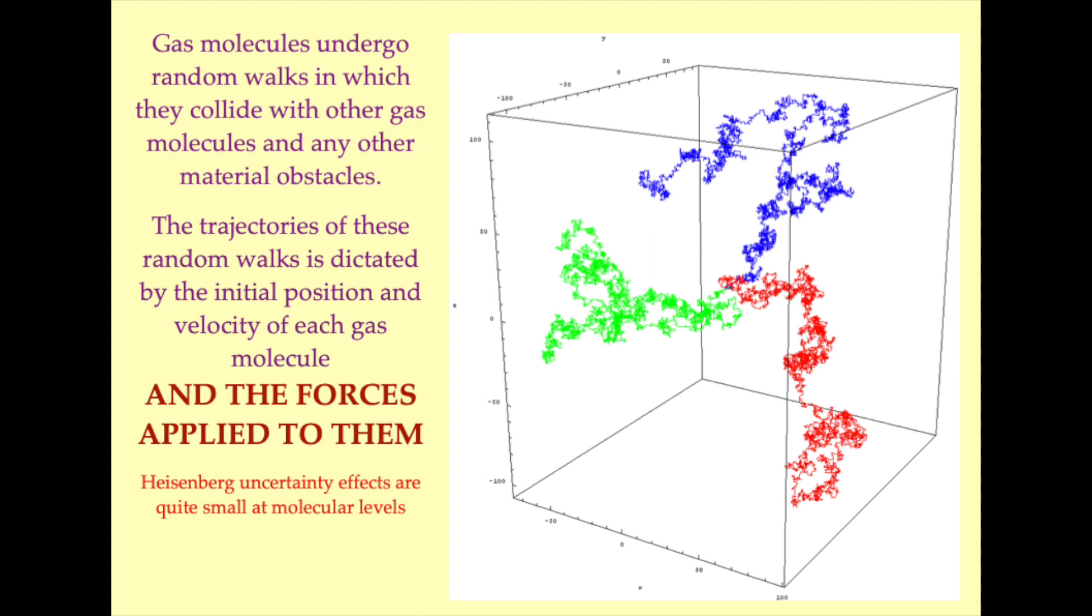In the first episode of this series, we saw the gas molecules move independently of one another. They progress along what are called random walks, which are dictated by the initial position and velocity of each gas molecule. The collisions that the gas molecules undergo with one another and any obstacles in their path, and the forces that are applied to the gas molecules, be they reaction forces, electromagnetic forces, or gravitational forces.